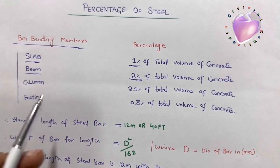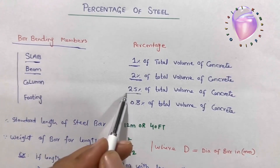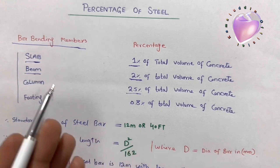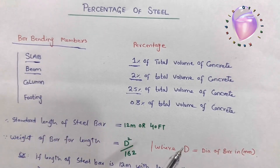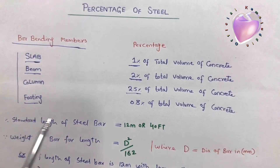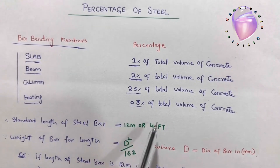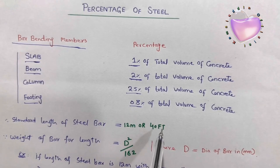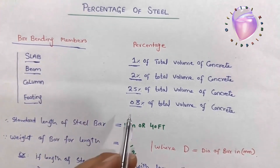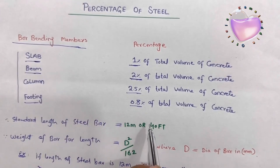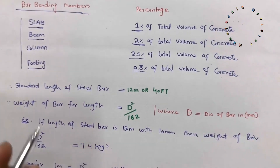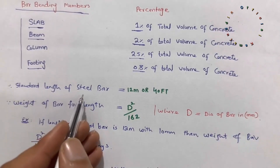For the column, we require 2.5 percent of steel — you can use up to 2.5 percent but not more, as this is the high value for an RCC column. For footing construction, we use 0.8 percent of the total volume of concrete. From that total volume of concrete for the footing, we use 0.8 percent of steel reinforcement.